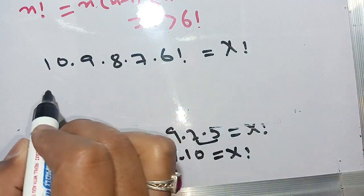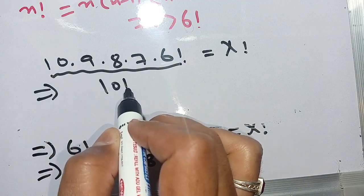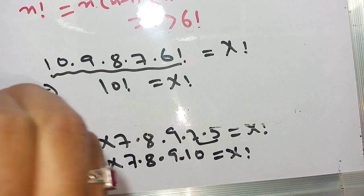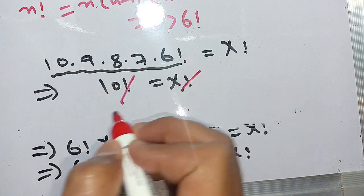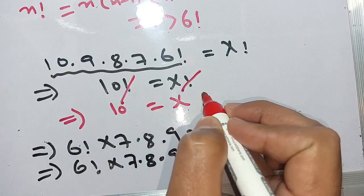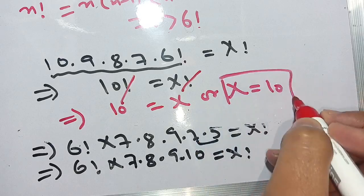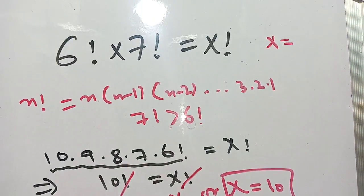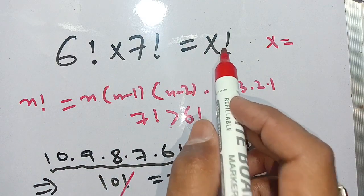We can write this as 10 factorial is equal to x factorial. From both sides we cancel out the factorial, which implies 10 is equal to x, or x is equal to 10. Thus the value of x is equal to 10, which satisfies the equation 6 factorial times 7 factorial is equal to x factorial.